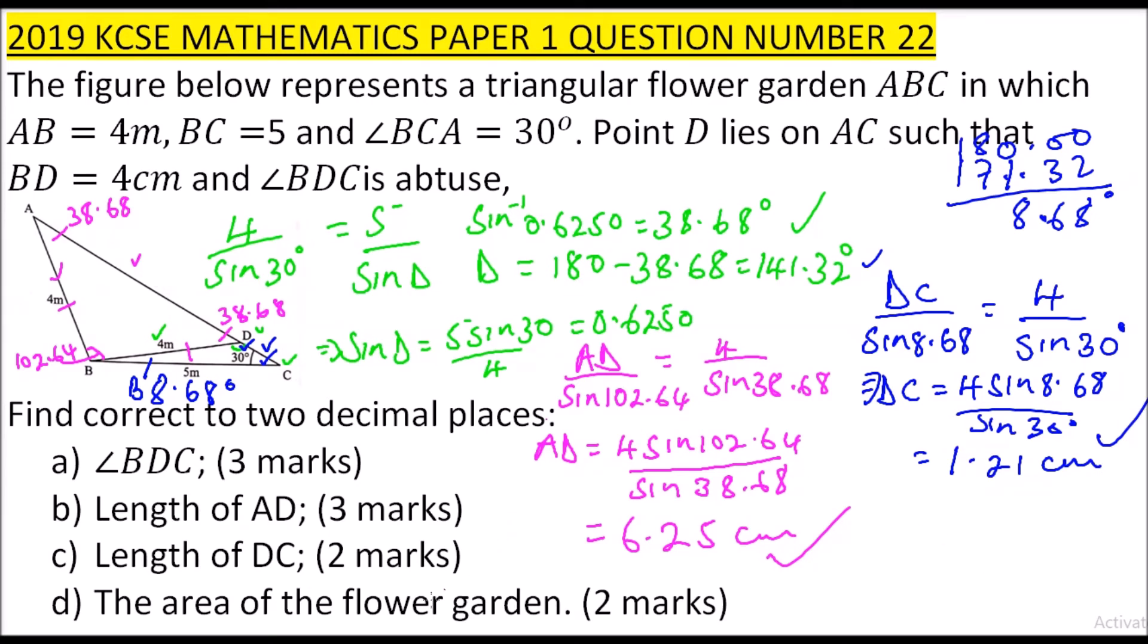Finally, part D, we are told the area of the flower garden. We can use the sine rule method, which is area equals half AB sine theta. So we need this angle here, angle ABC.